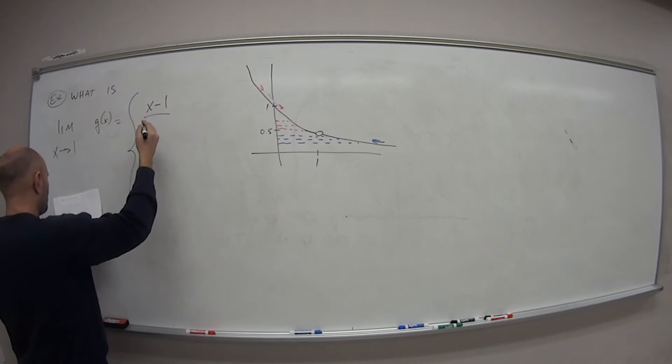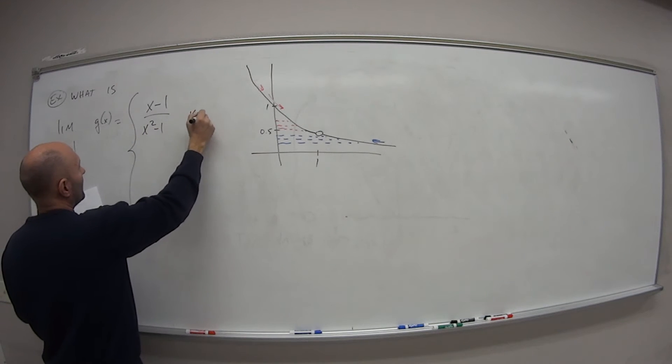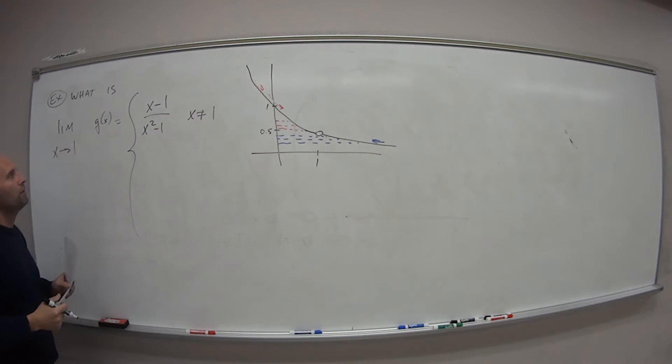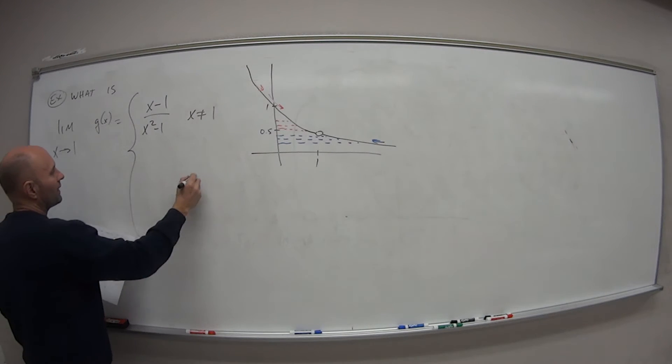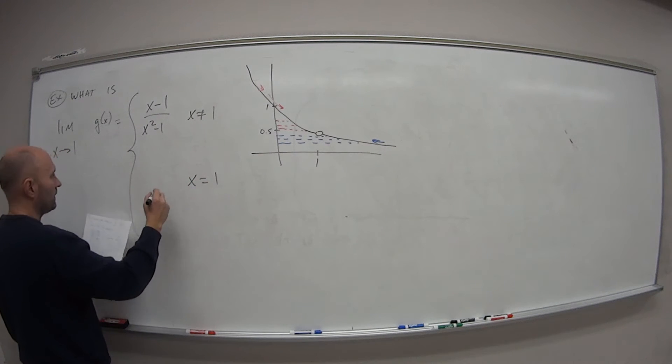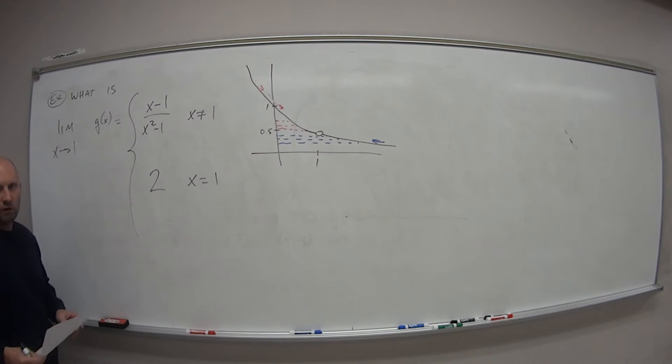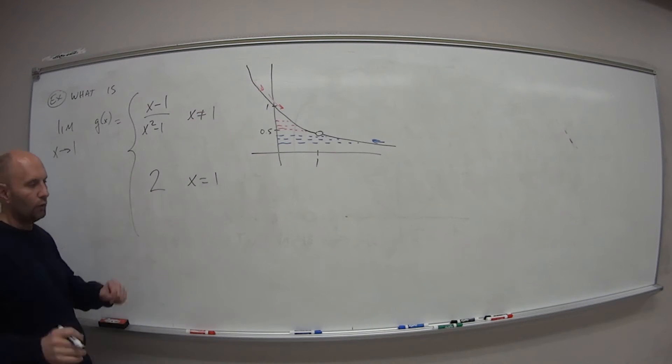If I have x minus 1 over x squared minus 1, when x is not equal to 1, that's one of our functions. But when x does equal 1, we have a value of 2, plain old number 2.